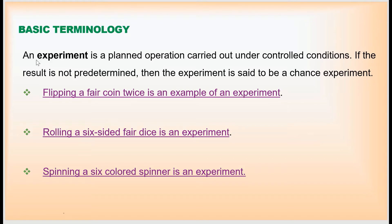First, we are going to define an experiment and look at some demonstrations related to it. An experiment is a planned operation carried out under controlled conditions — it's the act of doing something. If the result of the experiment is not predetermined, or we don't know what the result will be, then we say it is a random experiment or a chance experiment.